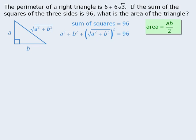From here, we should recognize that if we take the square root of a squared plus b squared and square it, we get a squared plus b squared. At this point, we can combine terms here, and then divide both sides by 2 to get a squared plus b squared equals 48. This information will be very useful later on.